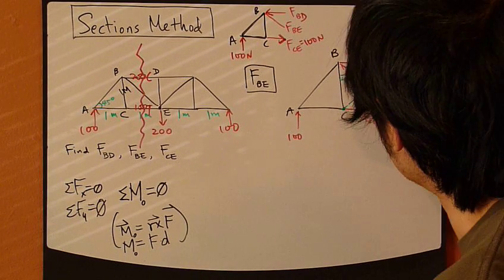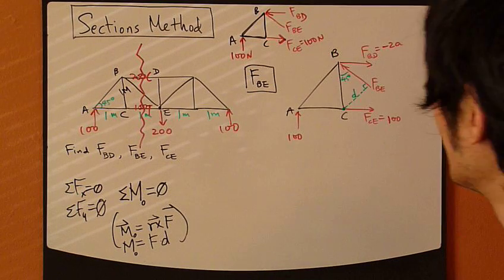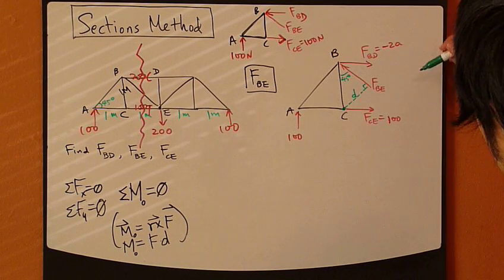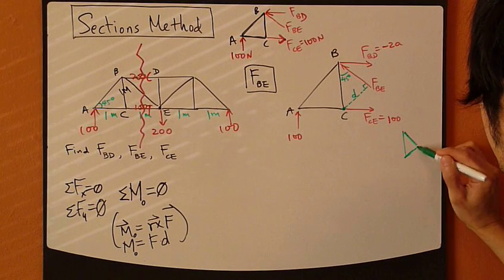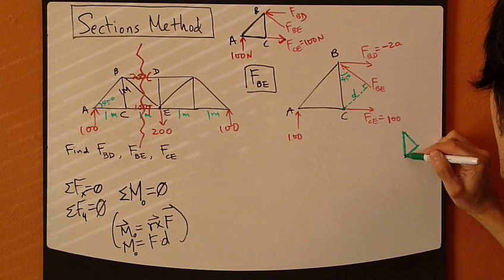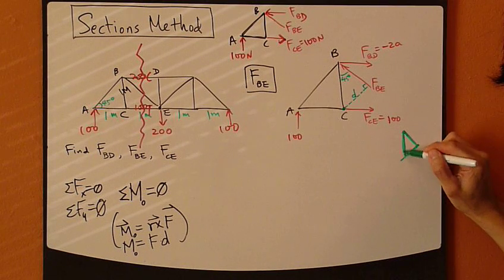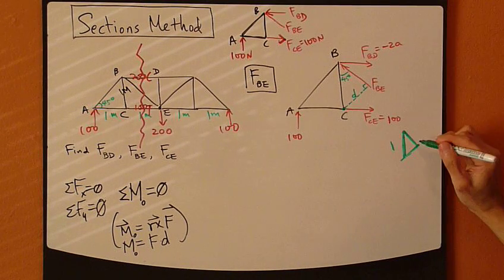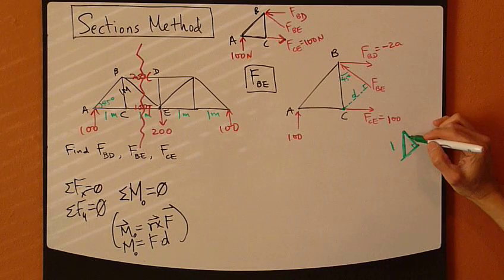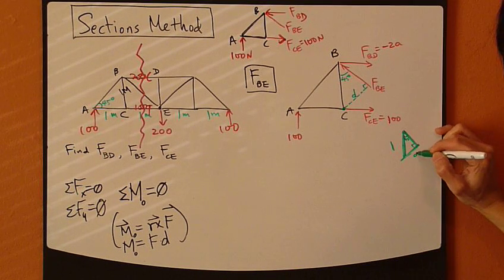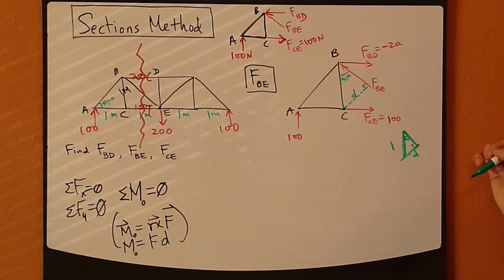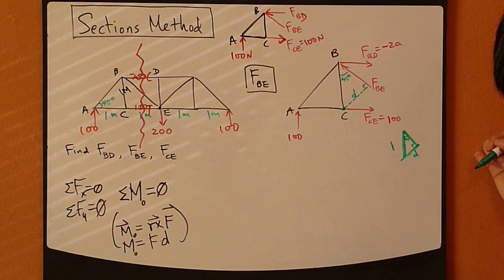Let's call this distance D. Draw this triangle just to figure out the geometry. This is 1 meter, this is a right triangle with 45 degrees, and this is my D.